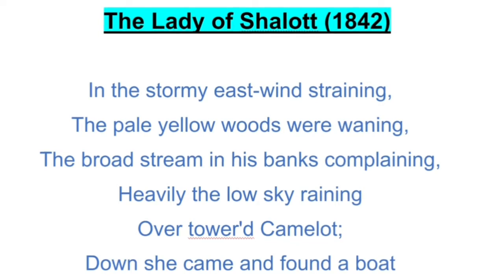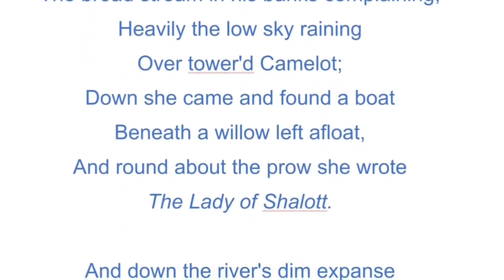The broad stream in his banks complaining — so the river was complaining, meaning it was flowing hard or rough that day because of the wind. Heavily the low sky raining — this is a rainy day and it rained heavily over towered Camelot. Everything is very much melancholic surrounding the city of Camelot and the surroundings of the island of Shalott.